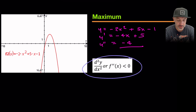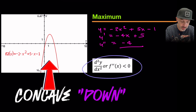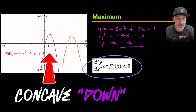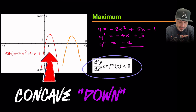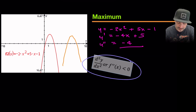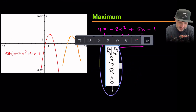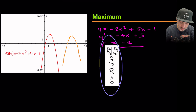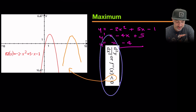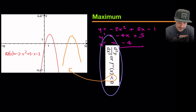A second derivative less than zero means we have found a maximum point on the curve — otherwise known as a concave down nature. We can apply the same rotation trick: rotating 'f'' < 0' 90 degrees gives a concave down shape, matching the curve. Remember, that's just a memory aid, not a mathematical proof.